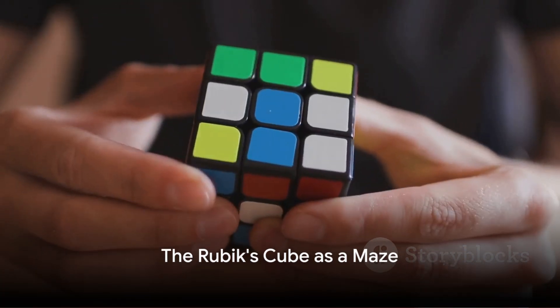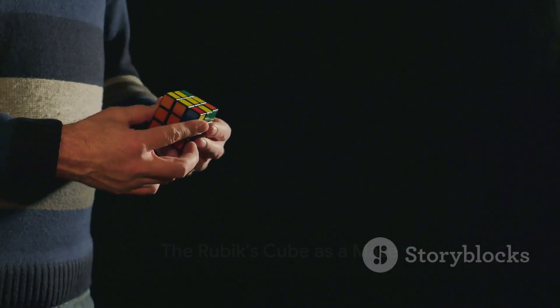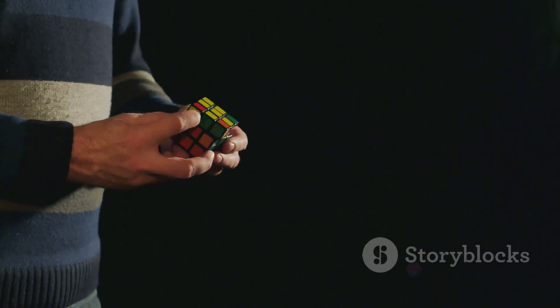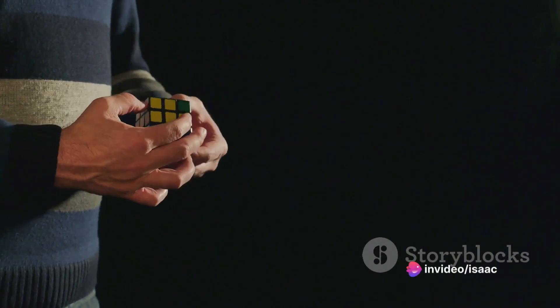Imagine the Rubik's Cube as a maze. The goal is to reach the end, or in this case, to get all the colors on each side of the cube to be the same.